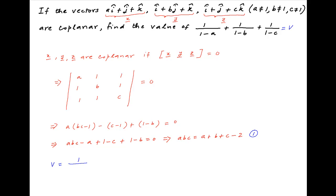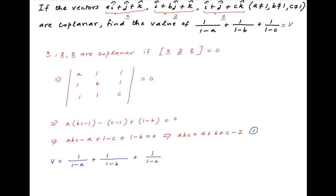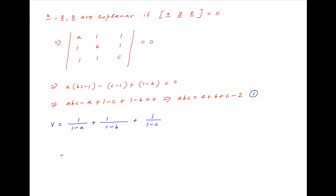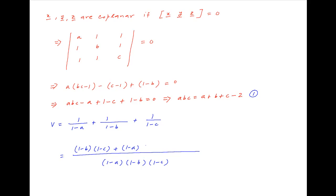Now the given expression whose value is to be found is equal to 1/(1 minus A) plus 1/(1 minus B) plus 1/(1 minus C). Let's denote this by V. Taking the common denominator (1 minus A)(1 minus B)(1 minus C), the numerator becomes (1 minus B)(1 minus C) plus (1 minus A)(1 minus C) plus (1 minus A)(1 minus B).